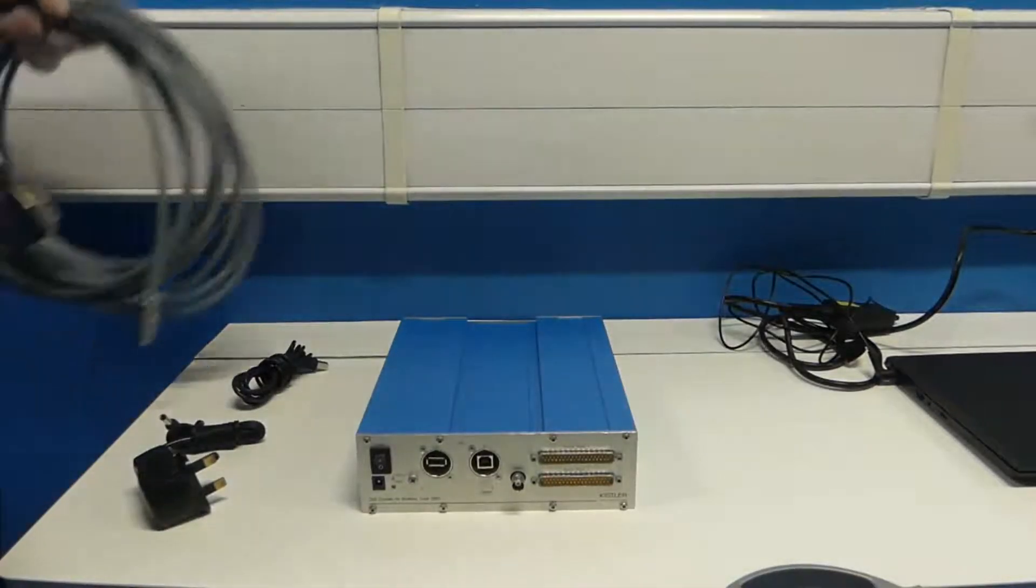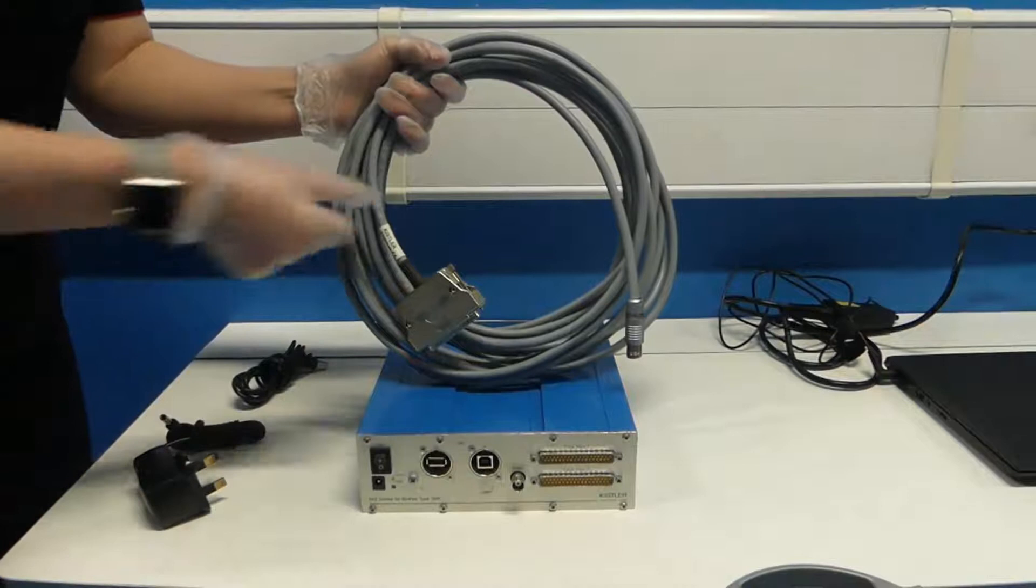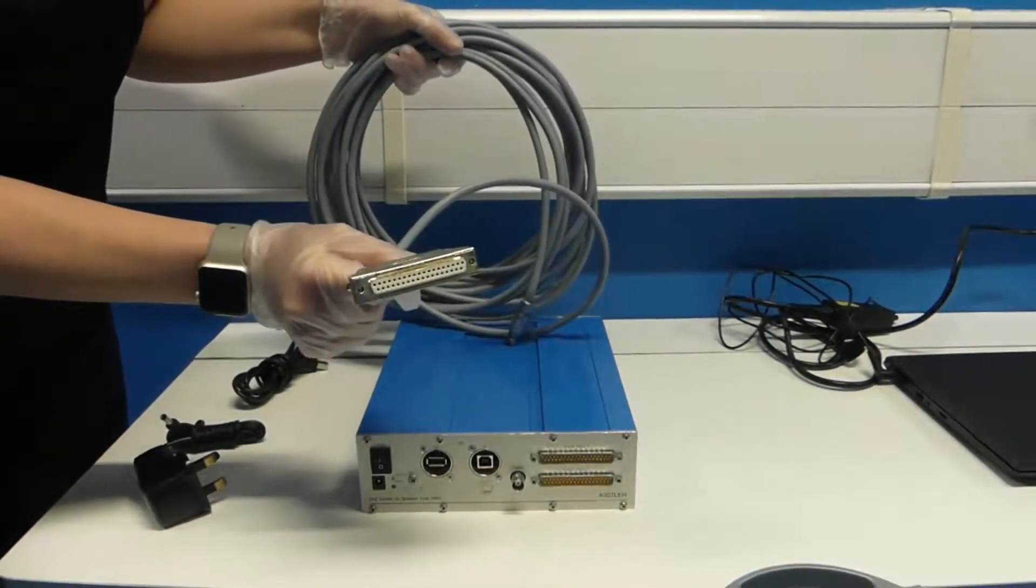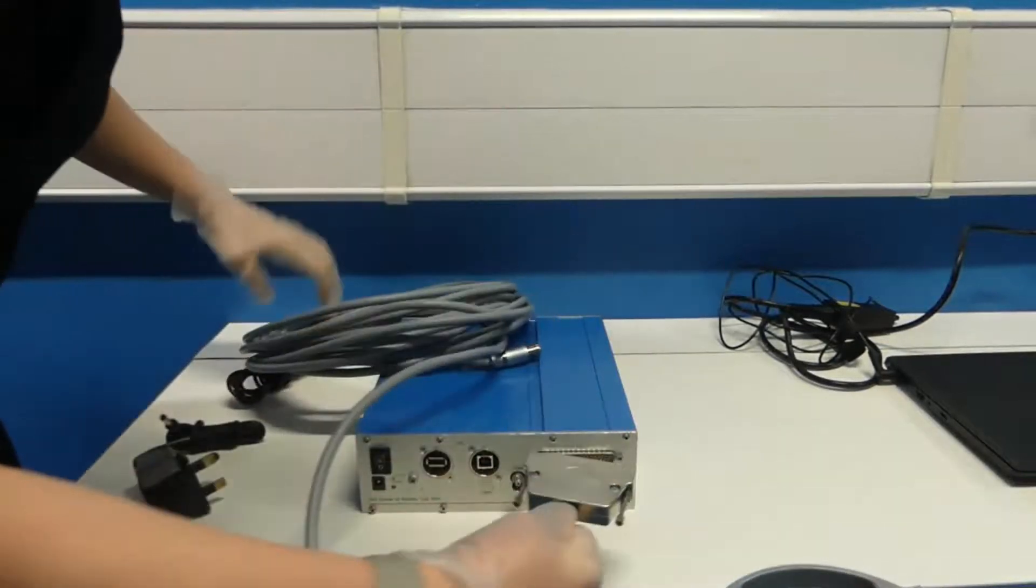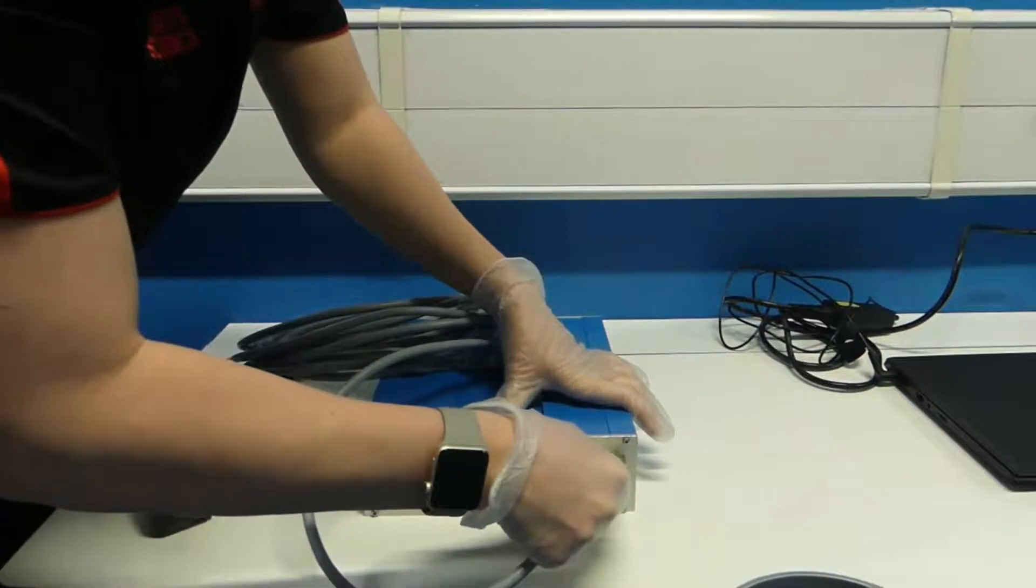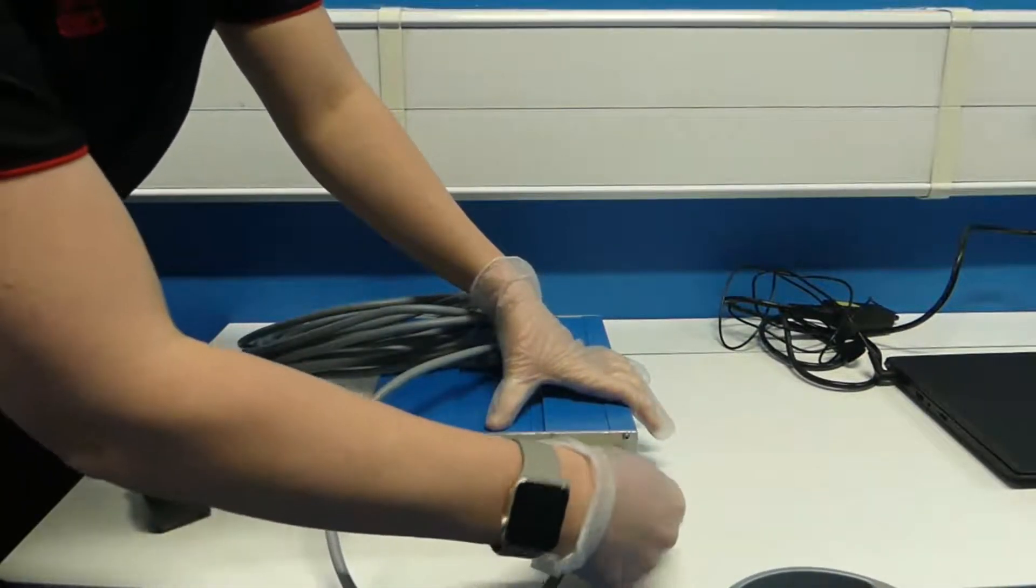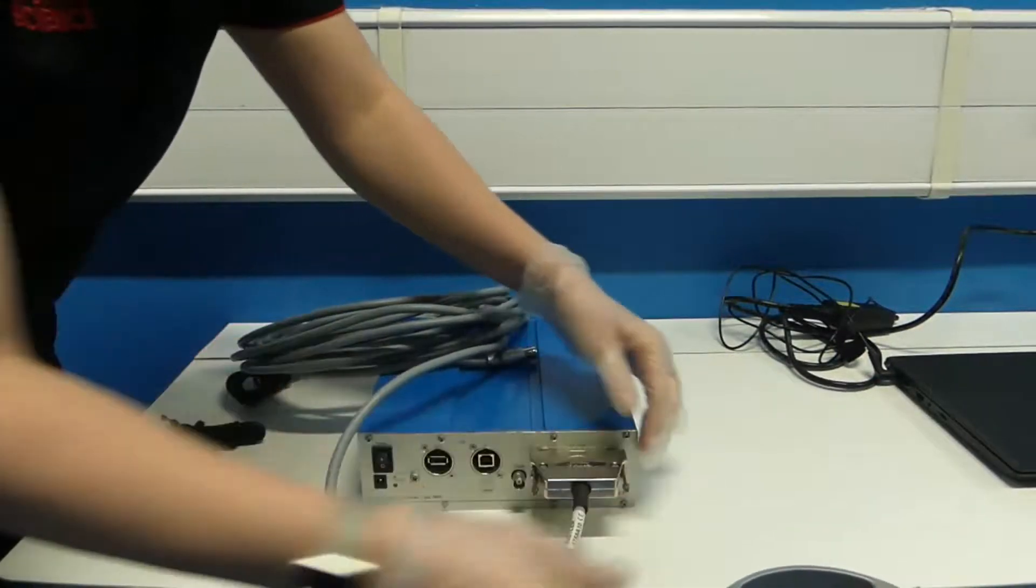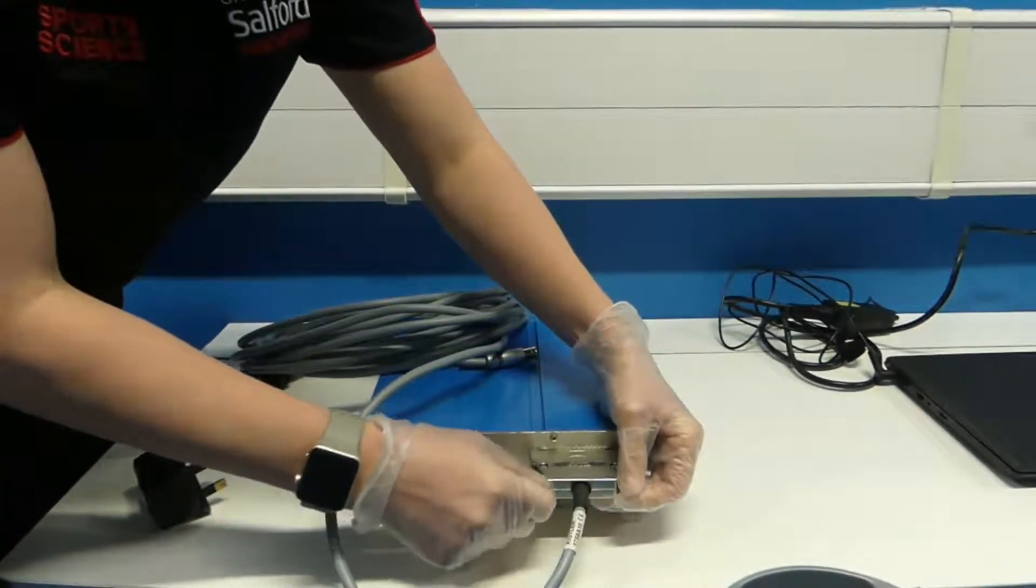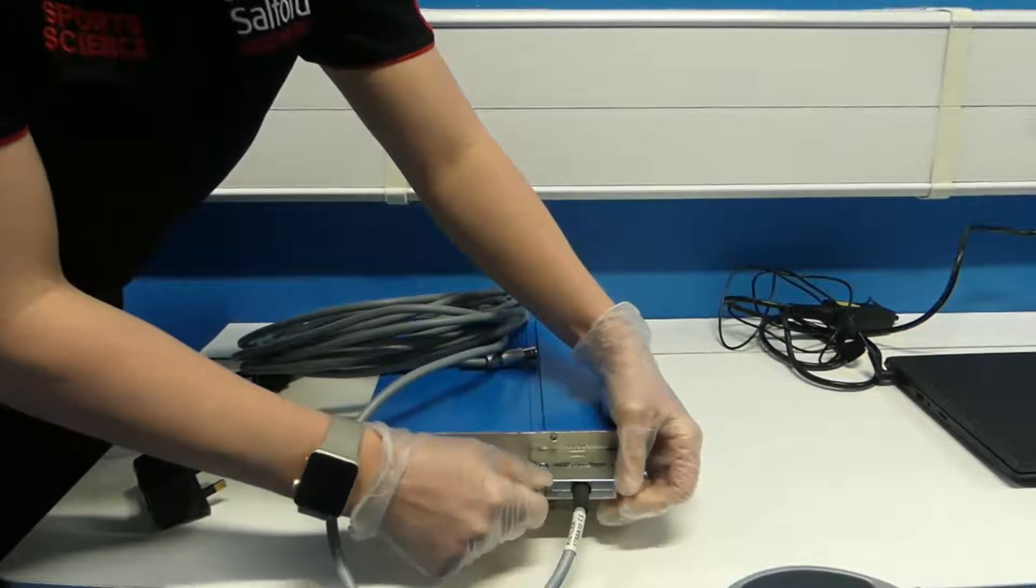Next you can plug the connection cable into the interface box. You can see here that the top part is wider so ensure that you have the cable the correct way up. Please notice that there are two ports where this can be plugged. When you are using one force plate you must plug the cable into the top port which is labelled force plate one. If you wish you can tighten the pins to ensure a secure attachment.